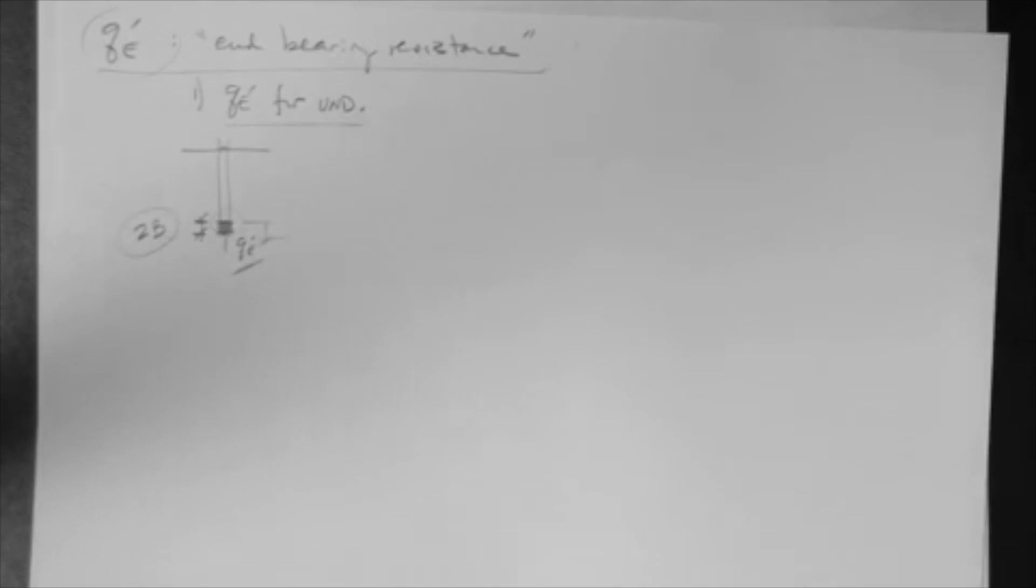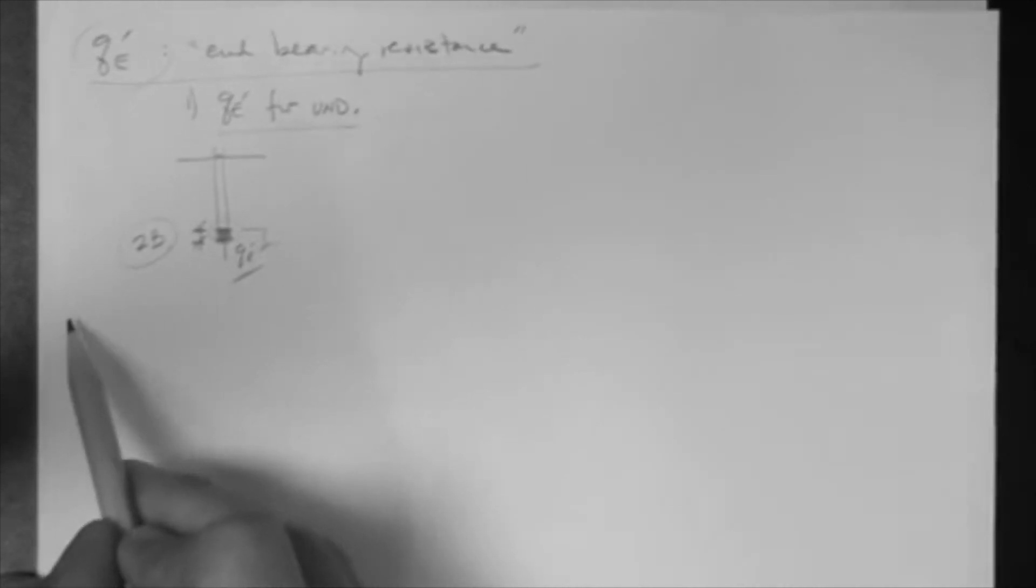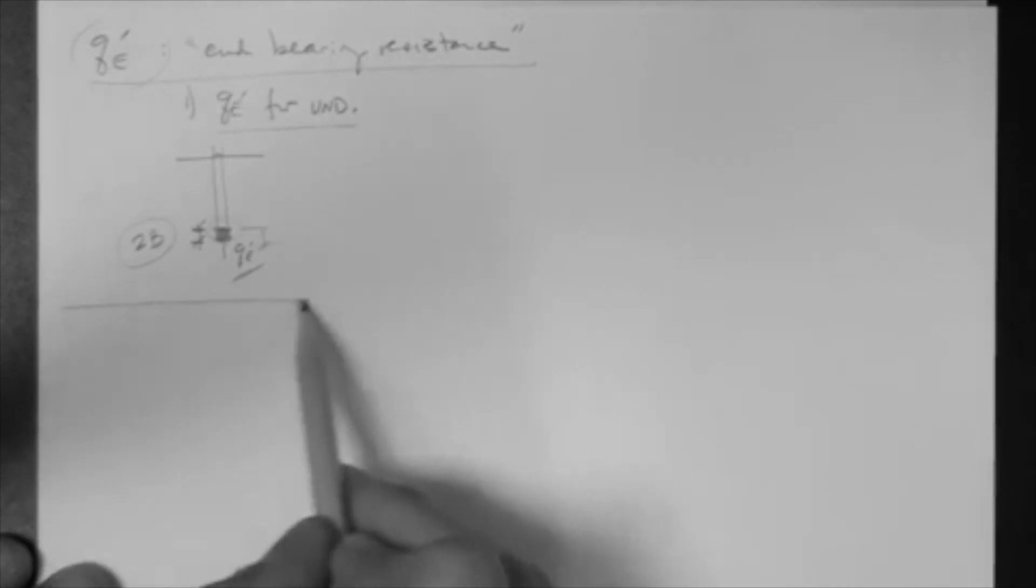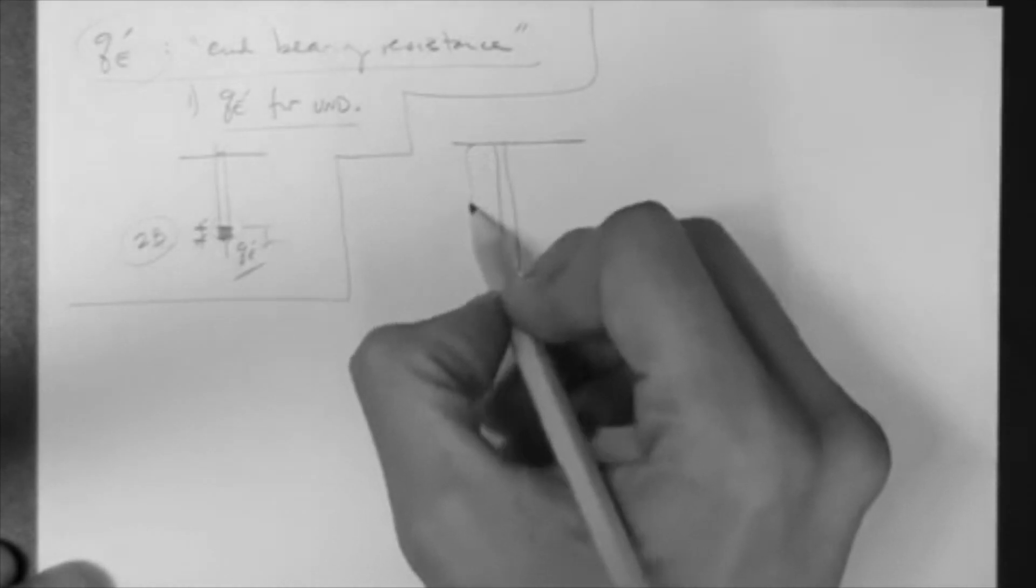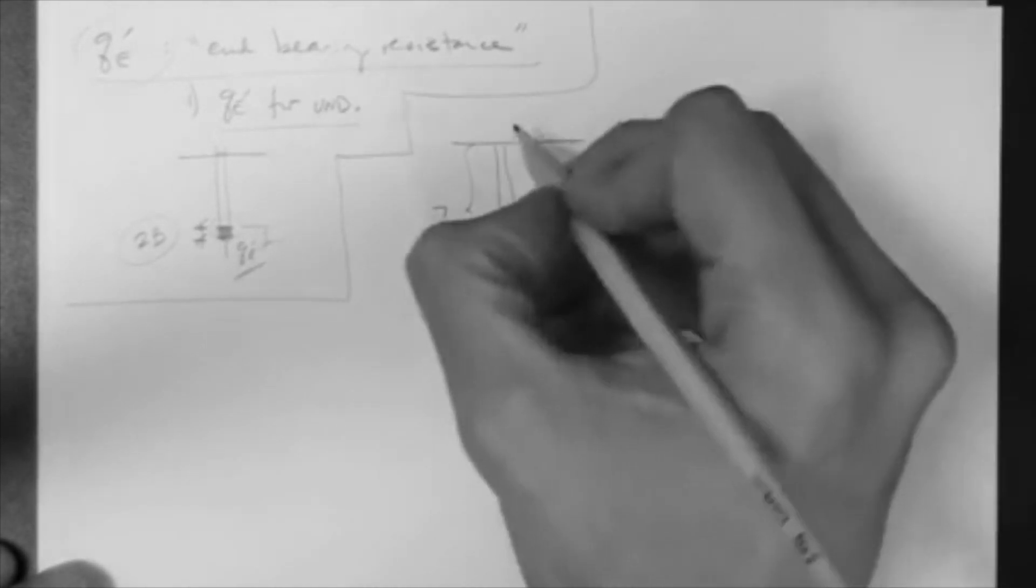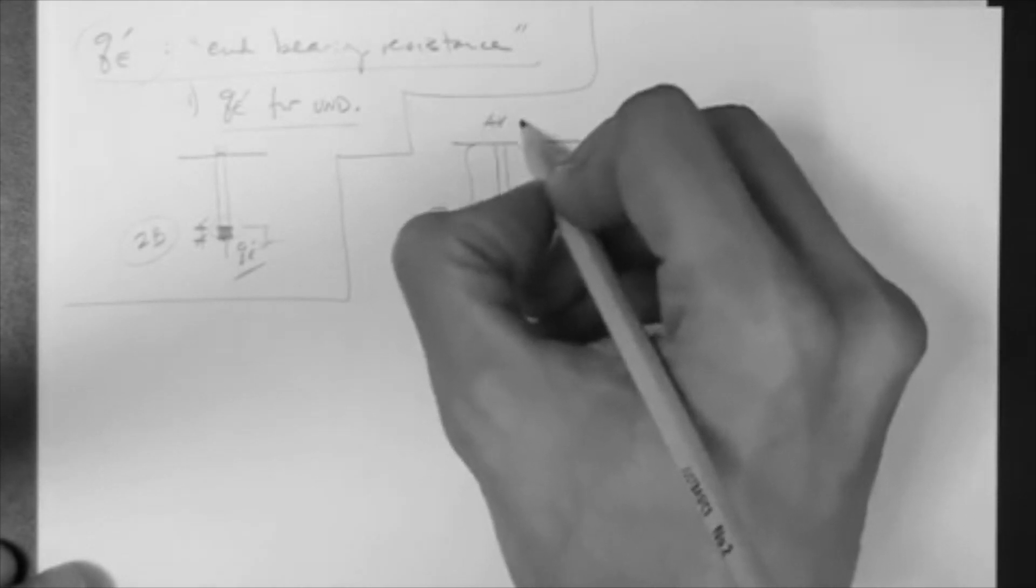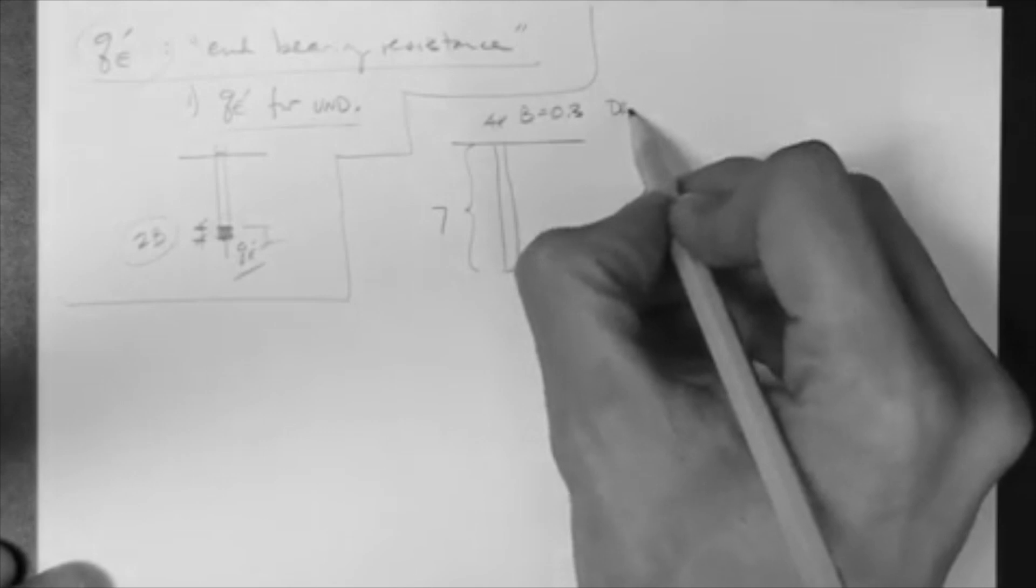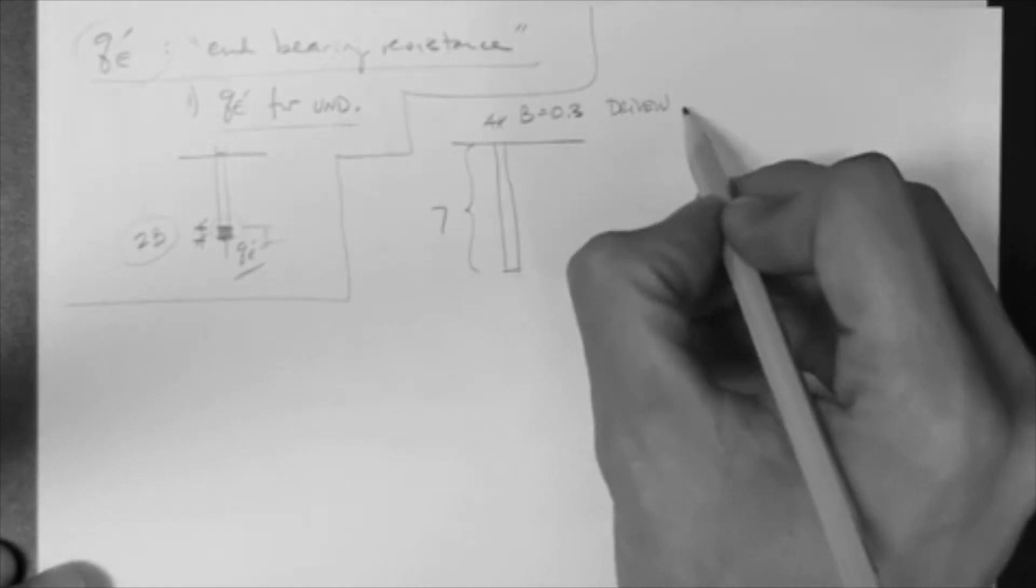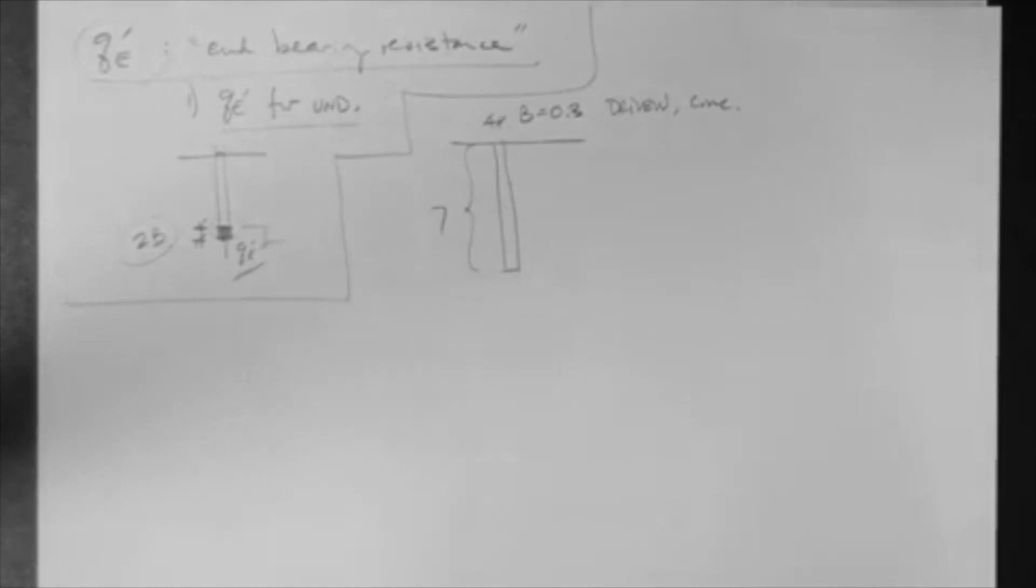So, very simple. What do you do? Well, let's do an example. In fact, we can just do it right here. Let's say that you have a pile. This pile is 7 meters long. Let's say, again, that the B is 0.3 meters, and it's a driven concrete pile.